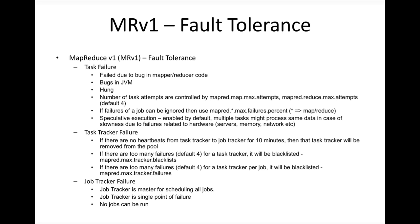The most significant failure is job tracker failure. It happens rarely, but when it happens it is a single point of failure because the job tracker is responsible for scheduling all the jobs, submitting jobs, and talking to task trackers to ensure jobs run successfully. If the job tracker fails, you cannot run any jobs until it is back up and running. It is important to understand that task failures and task tracker failures are addressed in MR1, but job tracker failure is a single point of failure.